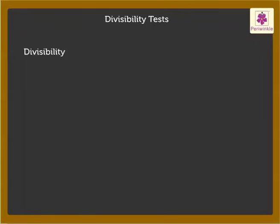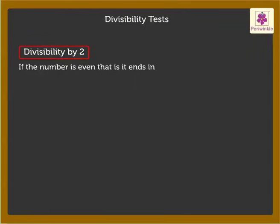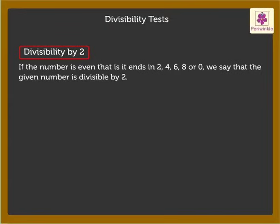Divisibility by 2: If the number is even, that is, it ends in 2, 4, 6, 8 or 0, we say that the given number is divisible by 2. For example, 26 ends in 6. Thus, it is divisible by 2.